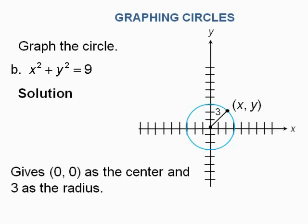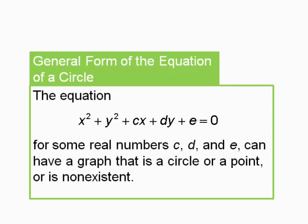Another example: graph this circle — x squared plus y squared equals 9. There are no h and k numbers after x and y, so the center is (0, 0). The radius: since r squared equals 9, take the square root of both sides, r equals 3. Starting at the center (0, 0), go right 3, up 3, left 3, and down 3 to graph the circle.